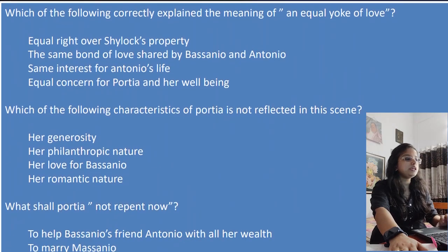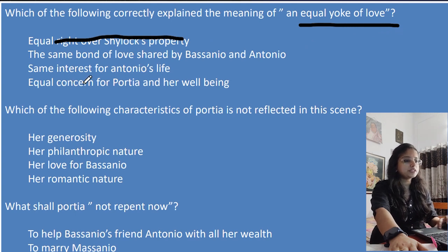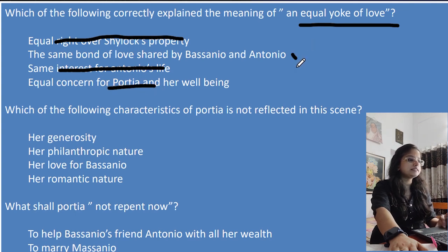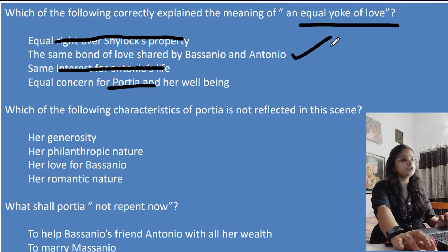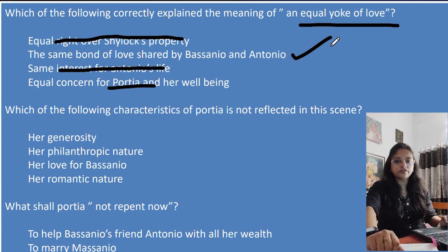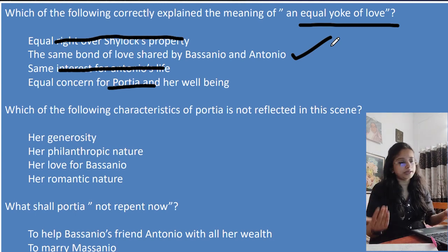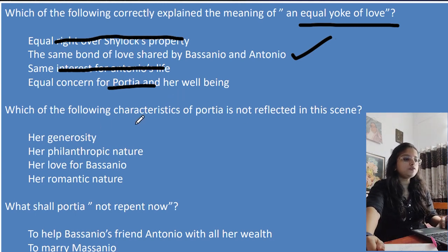Which of the following correctly explains the meaning of 'an equal yoke of love'? The option 'equal right over Shylock's property' is incorrect. 'Some interest for Antonio's life' is also incorrect. 'Equal concern for Portia and her well-being' is not right either. The correct answer is 'same bond of love shared' — a yoke is the device used to attach two oxen to pull a cart, so it means the same bond of love shared by Bassanio and Antonio.